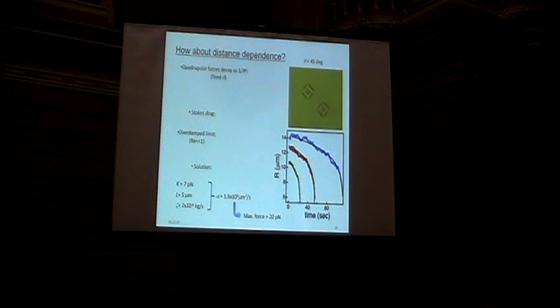And so, but the point is we can probe the distance dependence. So along 45 degrees, they attract strongly. So we can release them and track their motion. There's an attractive force and there's a Stokes drag.